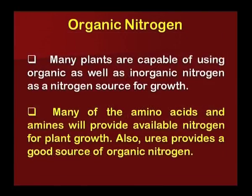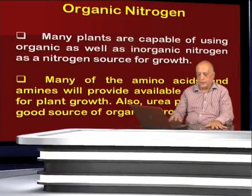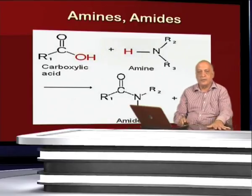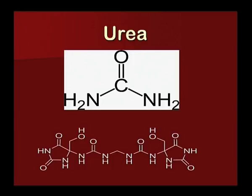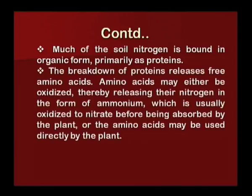Many plants are capable of using organic as well as inorganic nitrogen as a source for growth. Many amino acids and amines provide available nitrogen for plant growth. Urea provides a good source of organic nitrogen and is the most important fertilizer in agriculture. Much of the soil nitrogen is bound in organic form, primarily as proteins. The breakdown of proteins releases free amino acids, which may be oxidized releasing their nitrogen as ammonium — usually oxidized to nitrate before being absorbed — or the amino acids may be used directly by the plant.